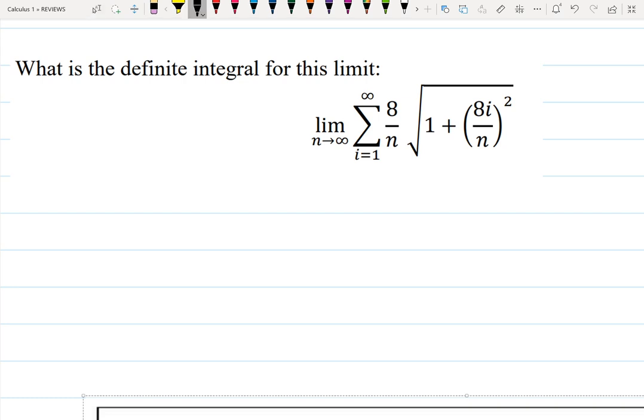The question here is asking what is a definite integral for this given limit? We are working with a limit as n goes to infinity, a sum in sigma notation for i from 1 to infinity. And then we have a product 8 over n multiplied by the square root 1 plus 8i over n squared.